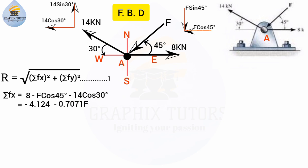Minus cos 45 equals 0.7071, and there is a force F, so I write it as minus 0.7071F. So ΣFx = −4.124 − 0.7071F. I'll tag that as equation two. Now I'll calculate ΣFy.